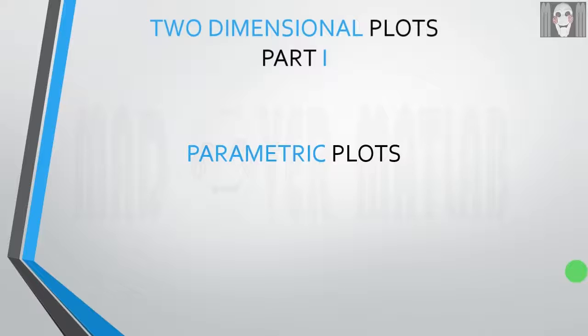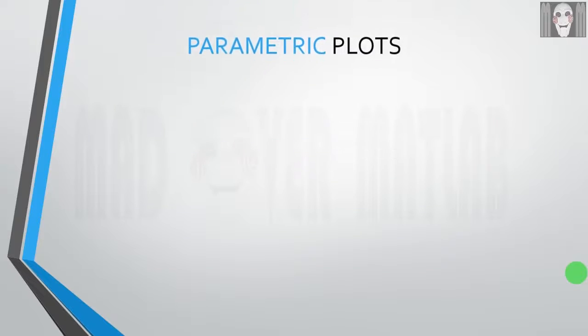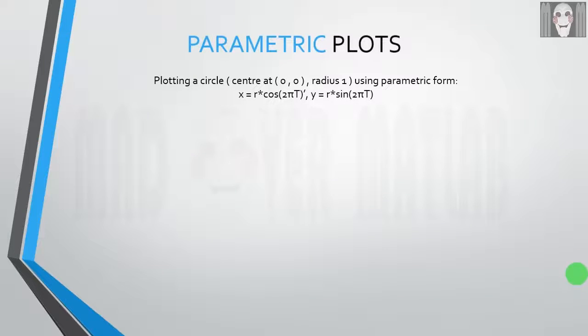So let us understand how to plot graphs in MATLAB using parametric plots. Let us see an example. We have to plot a circle which is having center at the origin and a radius of one unit using the parametric form.